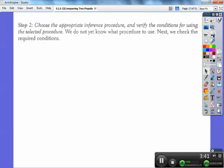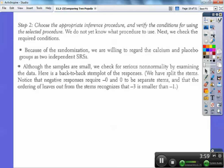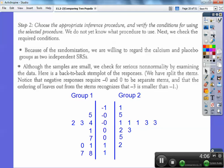Step two, choose the appropriate inference procedure and verify the conditions for using this. We do not yet know what procedure to use because I haven't taught you yet. So we're going to check the required conditions right here. Because of the randomization, we're willing to regard the calcium and placebo groups as two independent SRSs because they randomized it. And all the samples are small. We can check for serious normality by examining the data in a back-to-back stem plot.